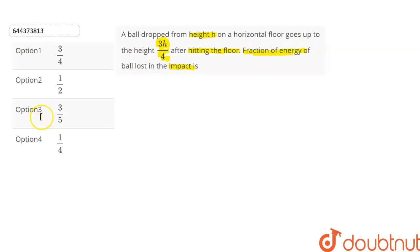We are given four options from which we have to choose the correct one. Let's find out. When the ball is at height h, let the initial potential energy of the ball be Ei. It will be equal